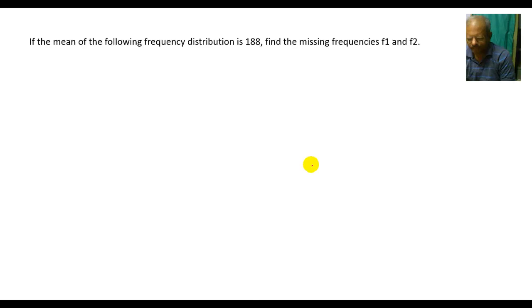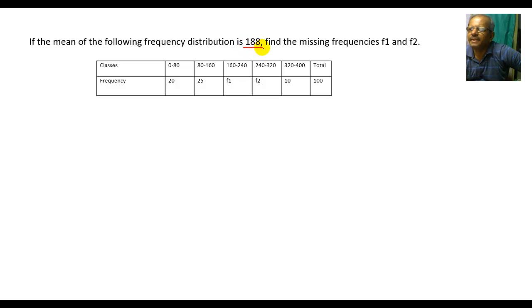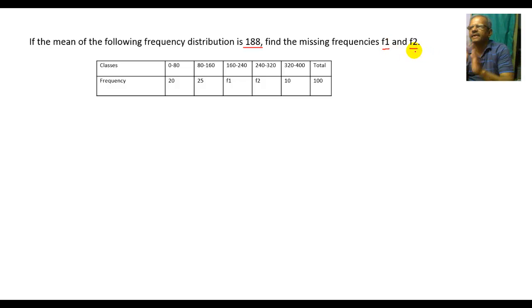Here is another question: if the mean of the following frequency distribution is 188, find the two missing frequencies F1 and F2.